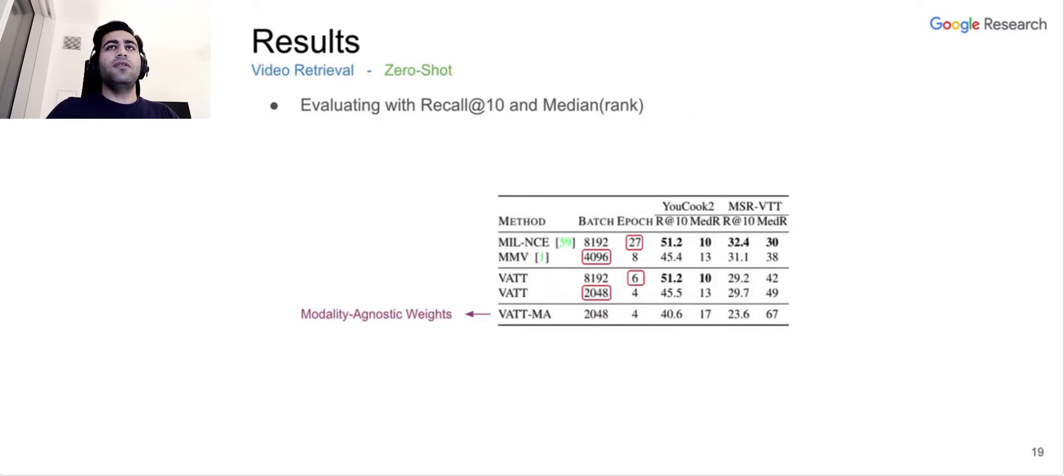So for zero-shot, we don't outperform the state-of-the-art, but we get comparable results when we use similar batch sizes, but even a smaller number of epochs.